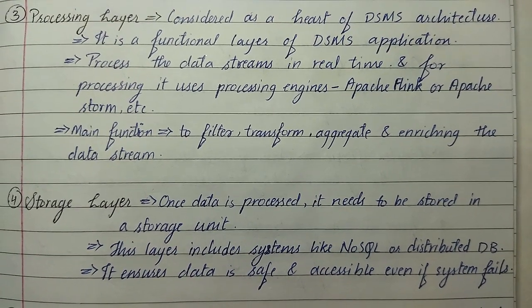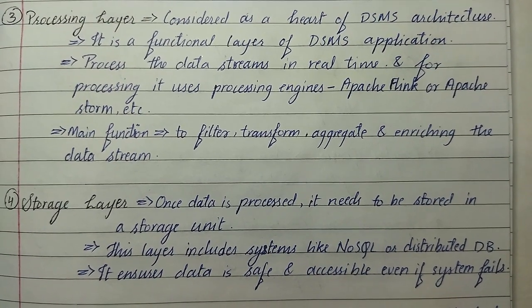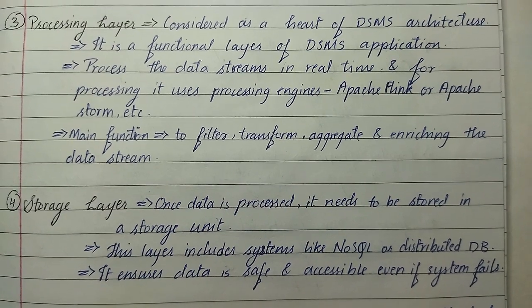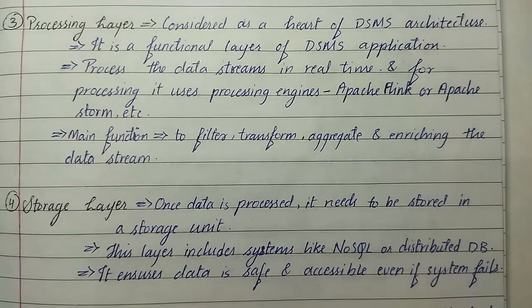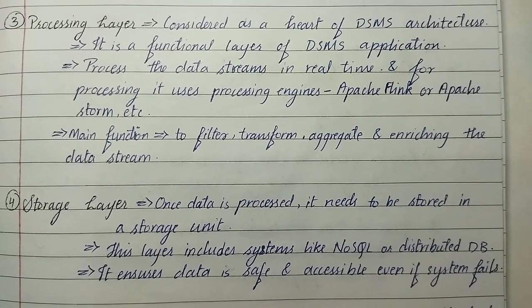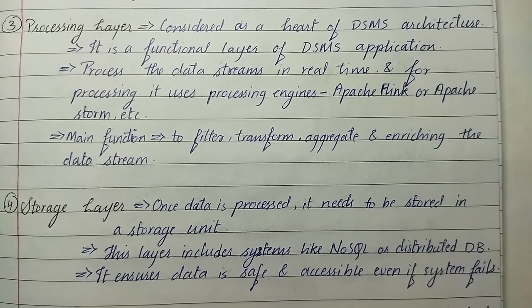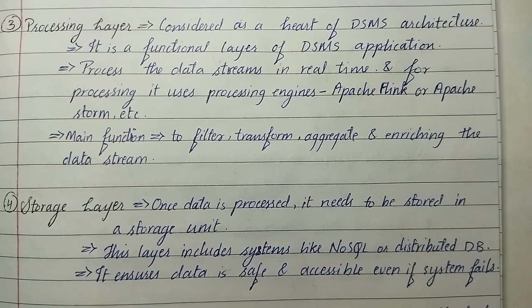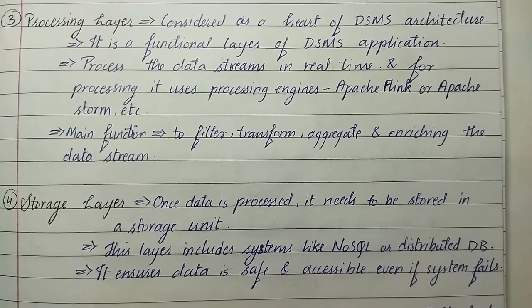Then fourth layer is storage layer. Once data is processed, it needs to be stored in a storage unit. This layer includes systems like NoSQL or distributed database, and it ensures data is safe and accessible even if the system fails.